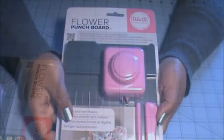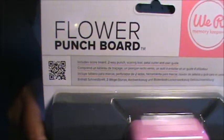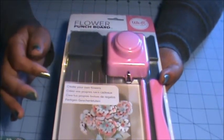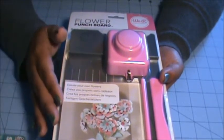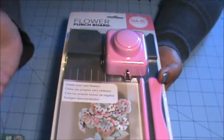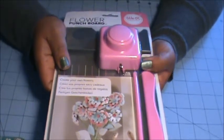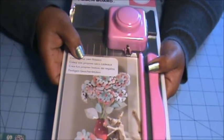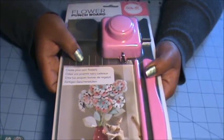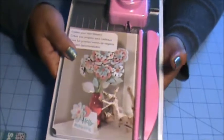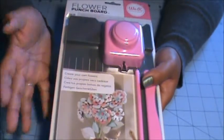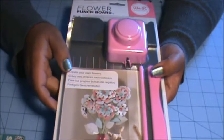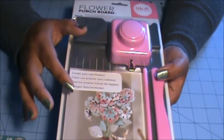From We Are Memory Keepers we also received this flower punch board. I'm super excited to get this one. I was watching previous scrapbook expo hauls and they were getting the envelope punch board, which I already had, so I was like oh I'm probably going to give that away. But for mine we ended up getting these flower punch boards. I saw a video on a demonstration of this before they released it and I was so super excited and I really really wanted one. But now I don't have to buy one because I got one during the workshop.